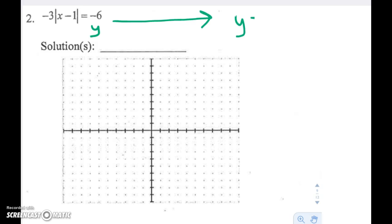My first function is going to be y equals negative 3, absolute value of x minus 1. And then my second function is going to be y equals negative 6. Now I have a system, and I feel pretty confident that I can solve this if I have a system. So we're breaking apart this one equation into two different equations so we can find an intersection point.